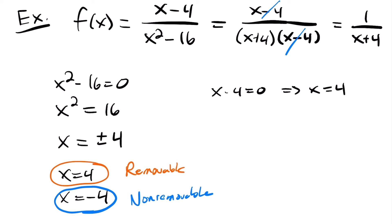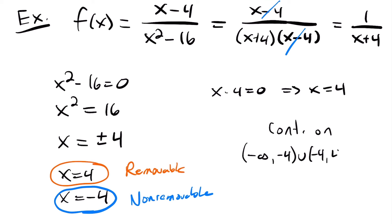To summarize: we have two discontinuities at x = 4 and x = −4 on the function (x − 4)/(x² − 16), which means it is continuous on the interval (−∞, −4) ∪ (−4, 4) ∪ (4, +∞). Everywhere except −4 and 4, the function is continuous.